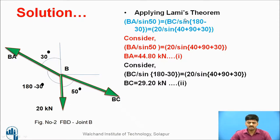Apply Lami's theorem for joint B: BA over sin 50 equals BC over sin (180-30) equals 20 over sin (40+90+30). To calculate the unknown forces, equate to the given force. So BA sin 50 equals 20 sin (40+90+30). Therefore, BA equals 44.80 kilonewton, equation number 1.